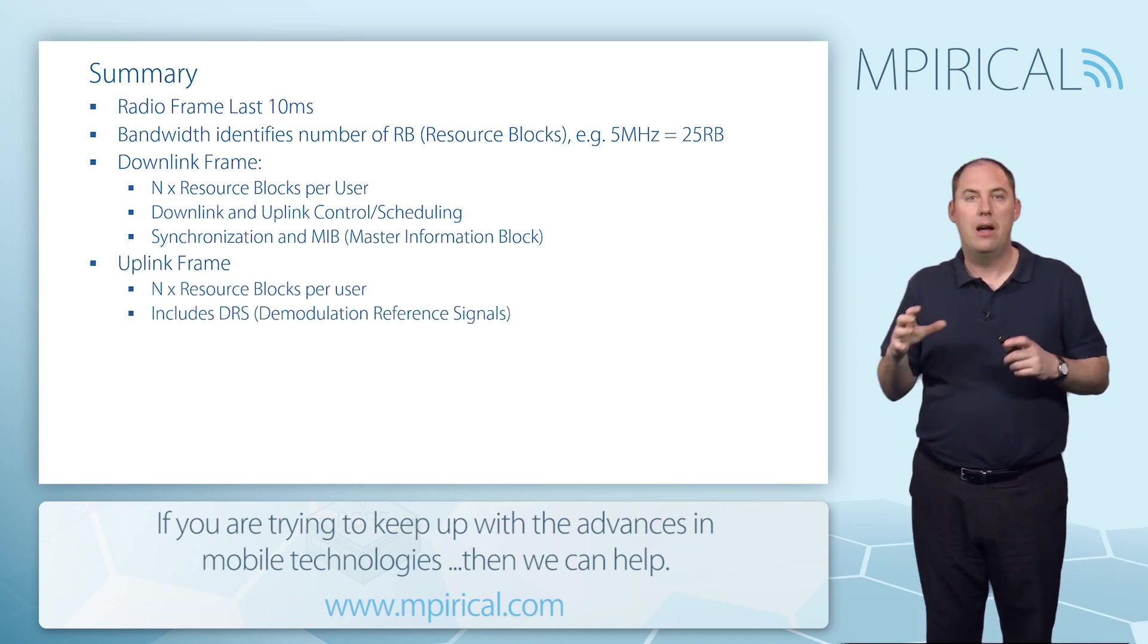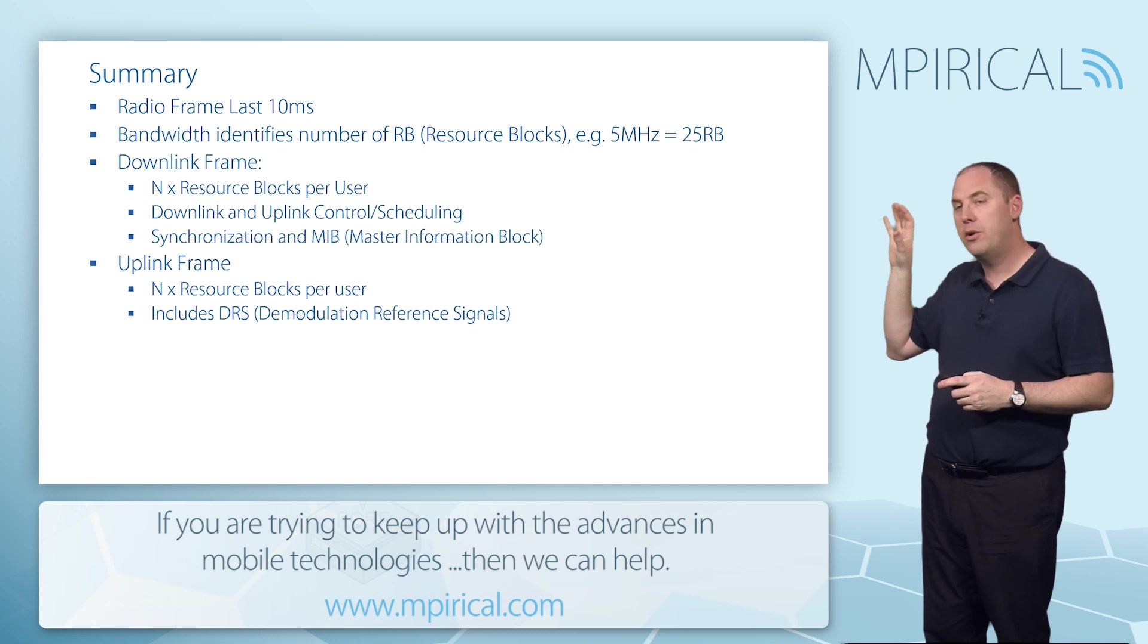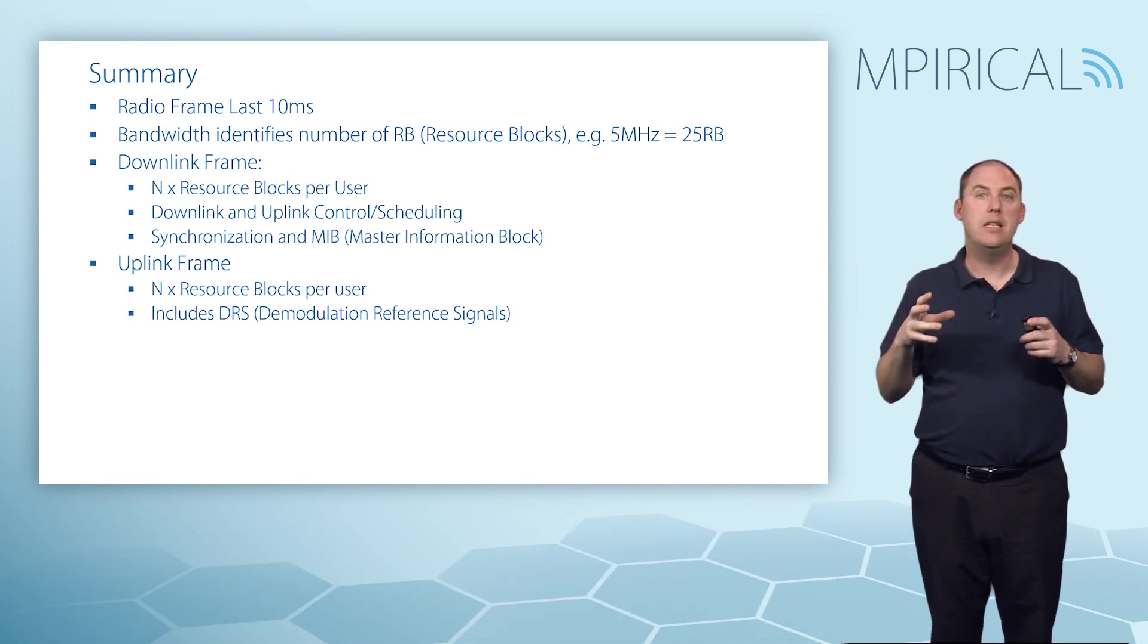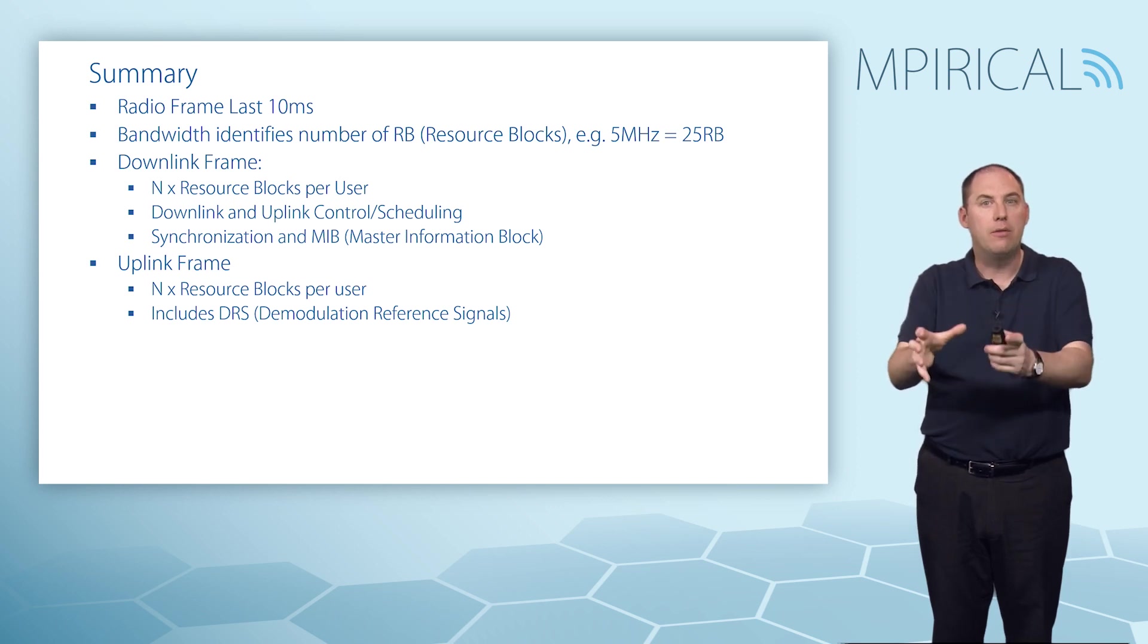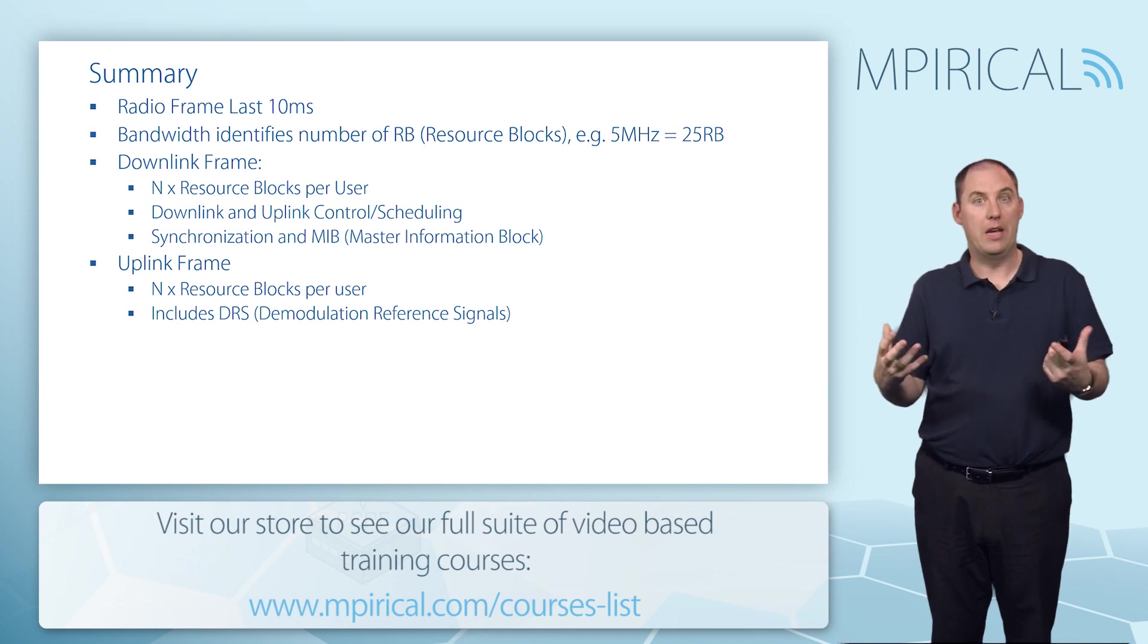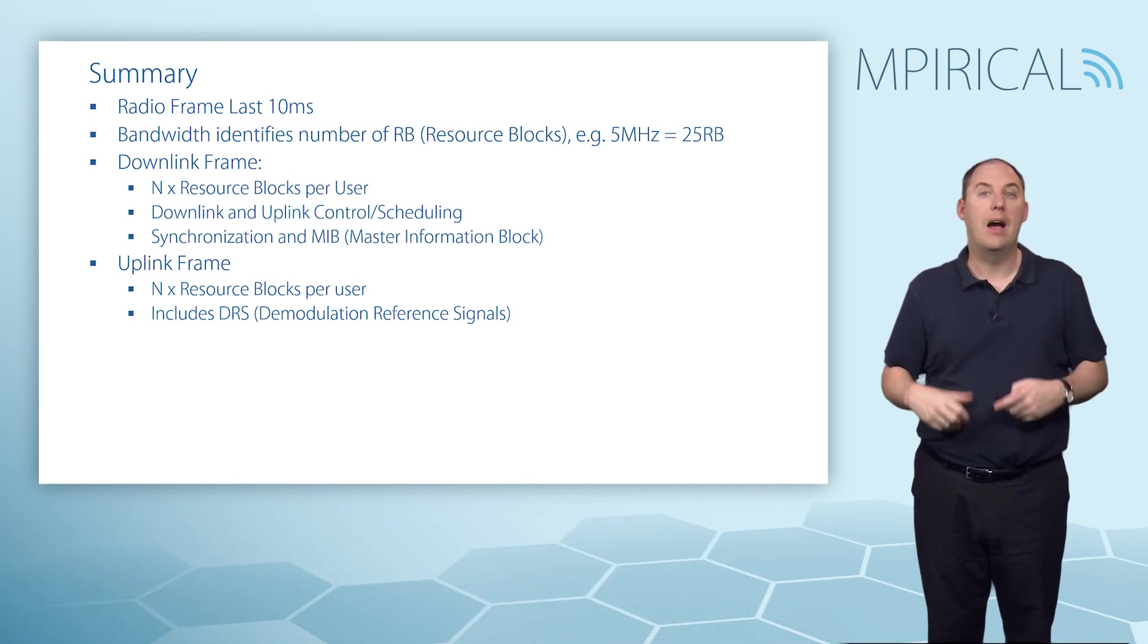The uplink frame is slightly different in terms of, yes, you allocate resources to users, but what you'll find is the allocation that you give the user will include what's called demodulation reference signals, allowing the eNodeB to lock on to that signal, do the correct estimation of the channel, and obviously decode it.